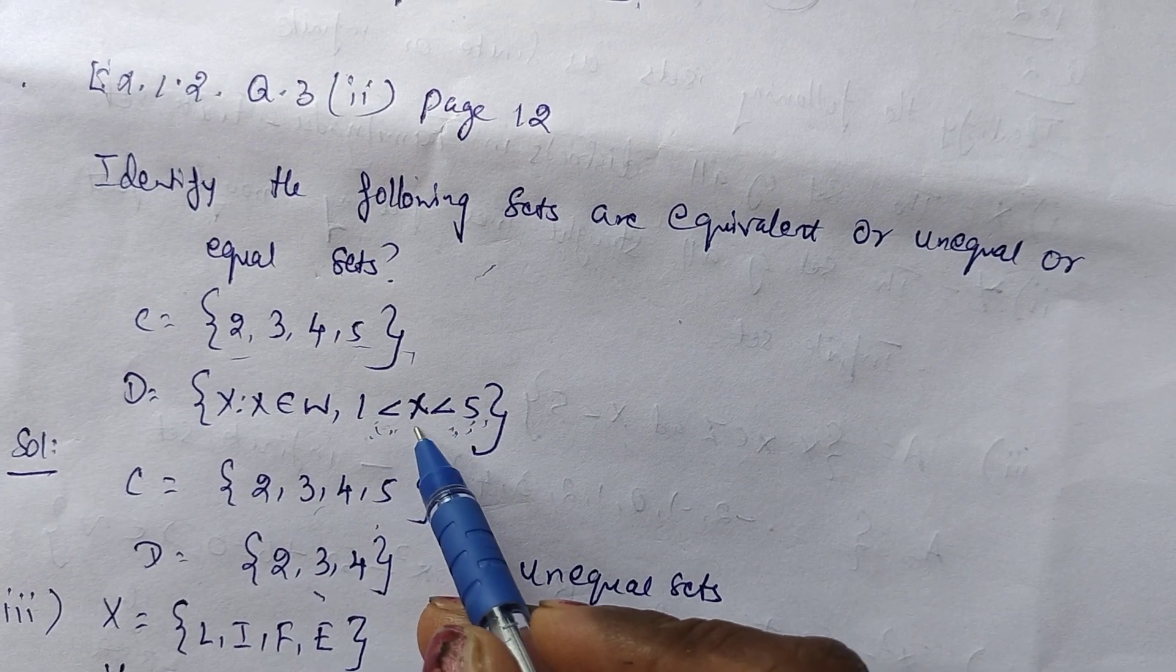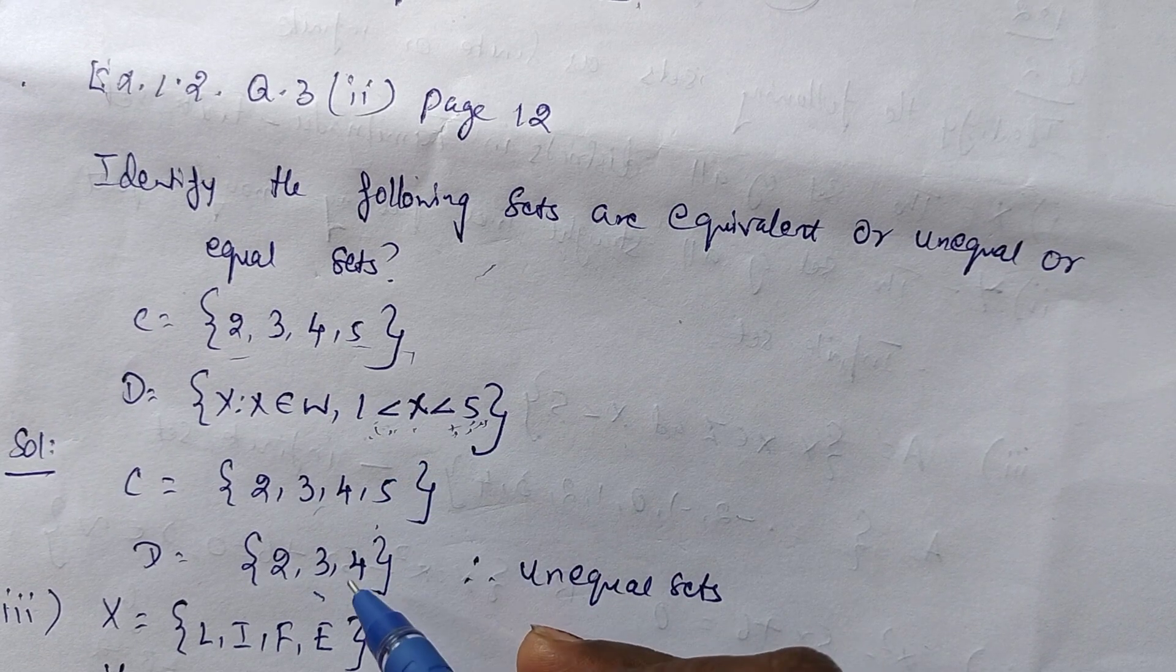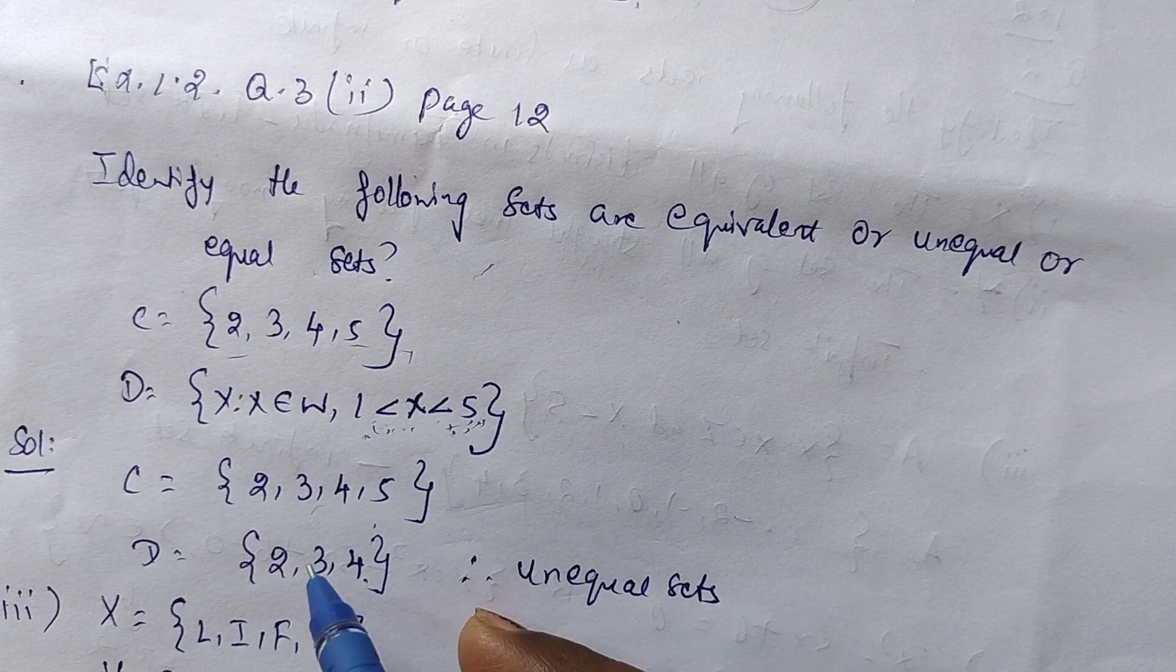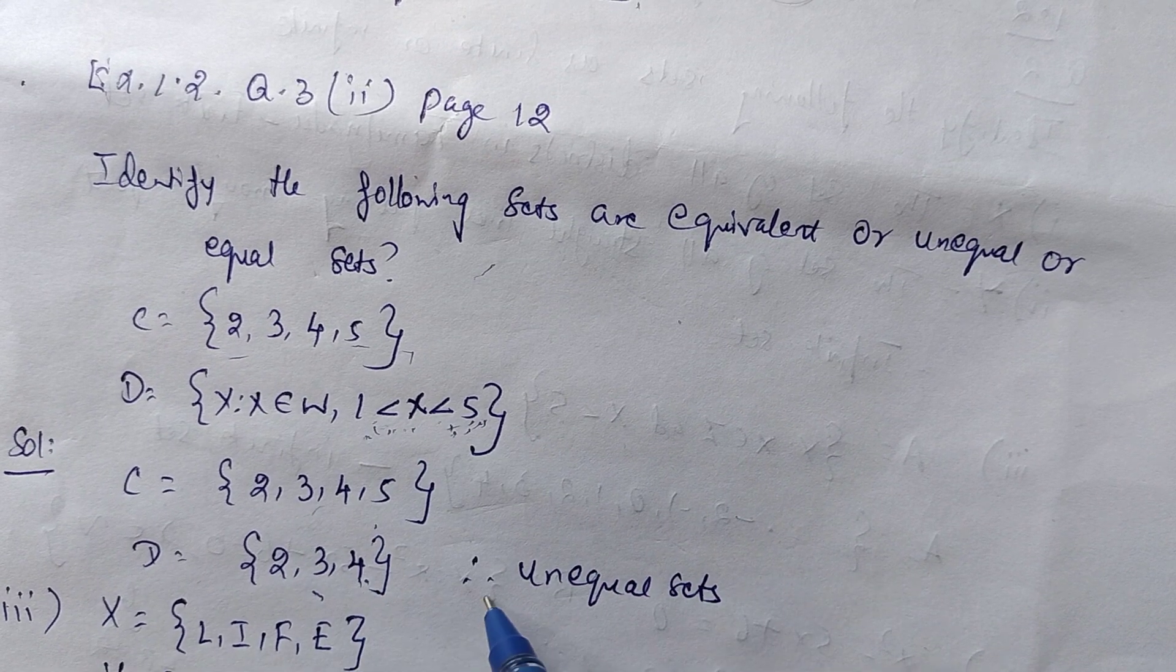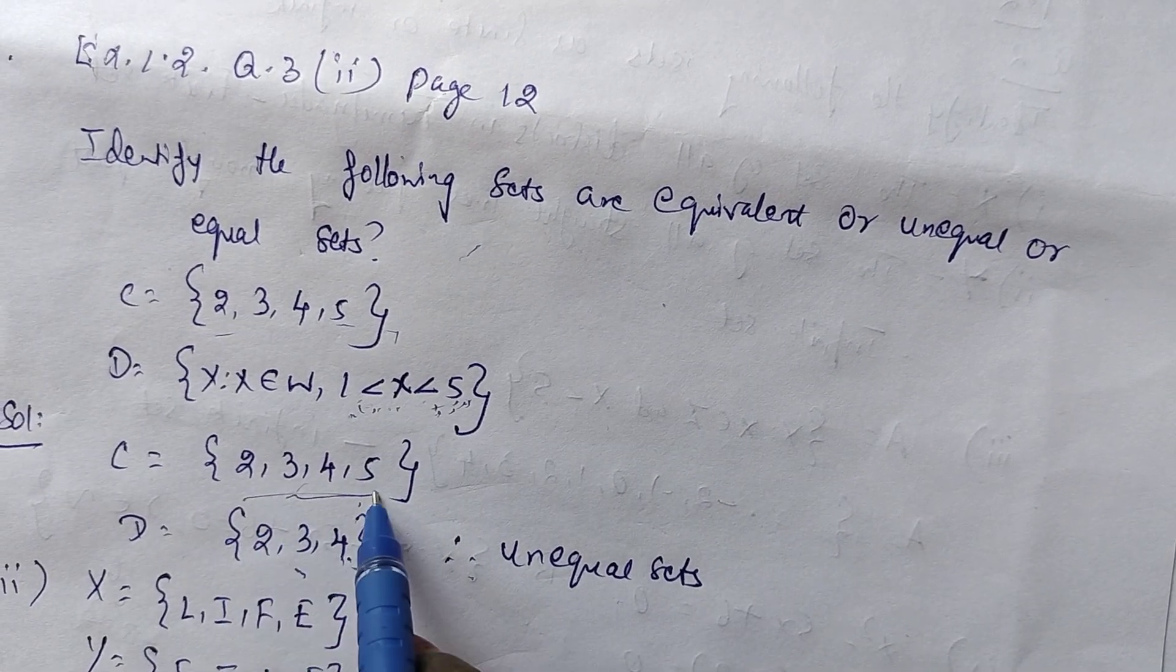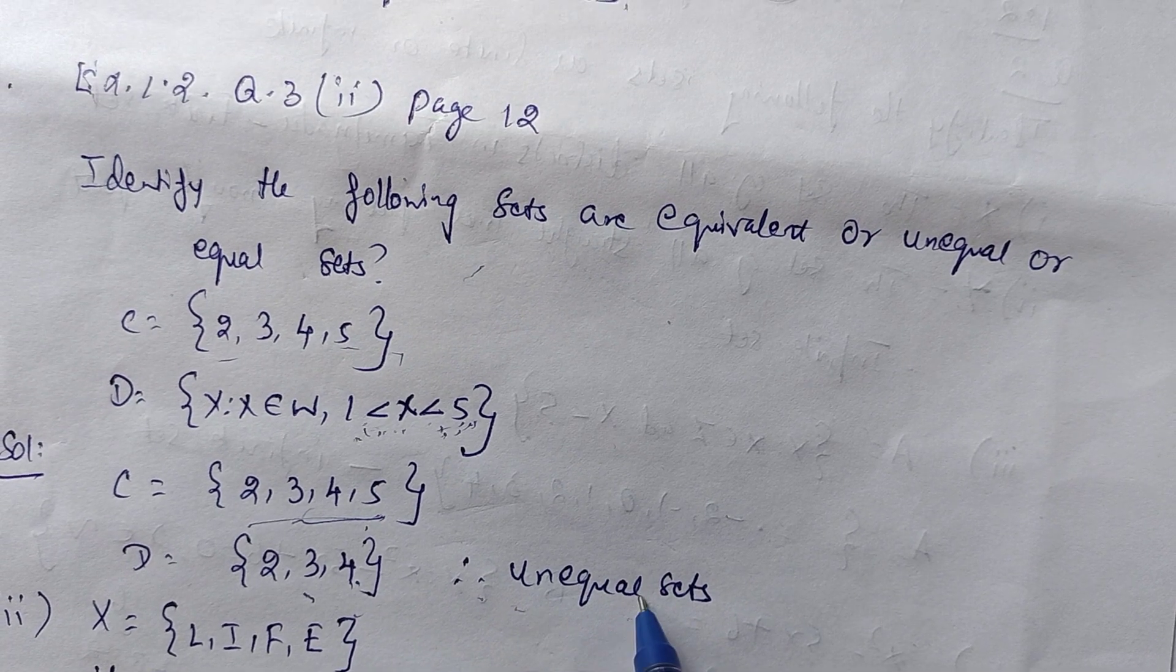If it's 1 less than or equal to x less than or equal to 5, that gives 1, 2, 3, 4, 5. But 1 less than x less than 5 gives 2, 3, 4. This has 5 elements, this has 3 elements. Therefore, it is unequal sets.